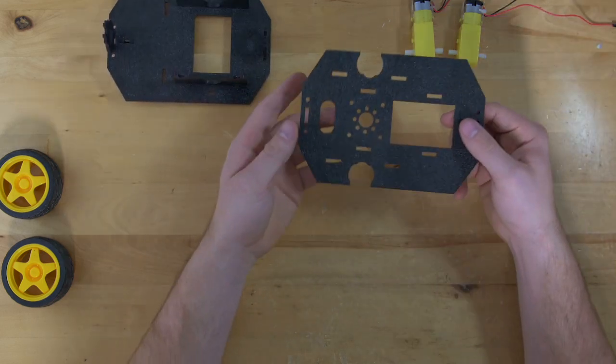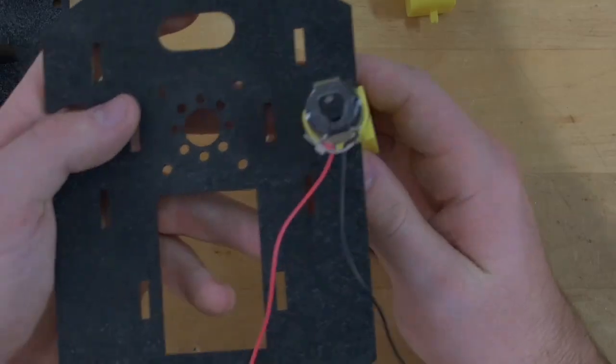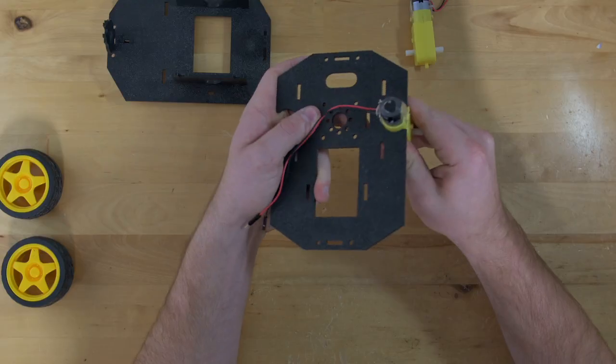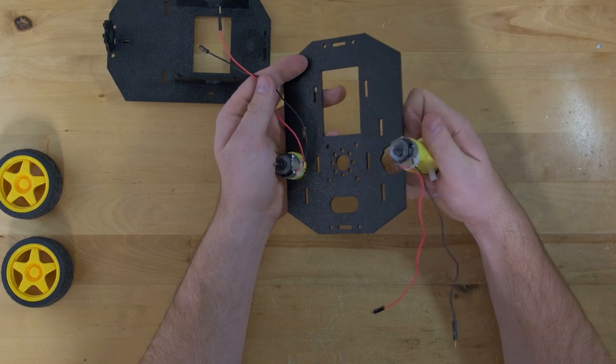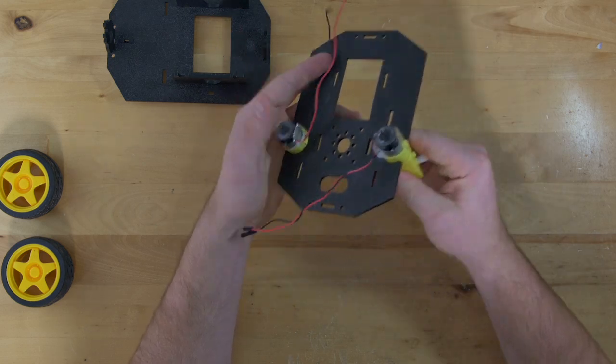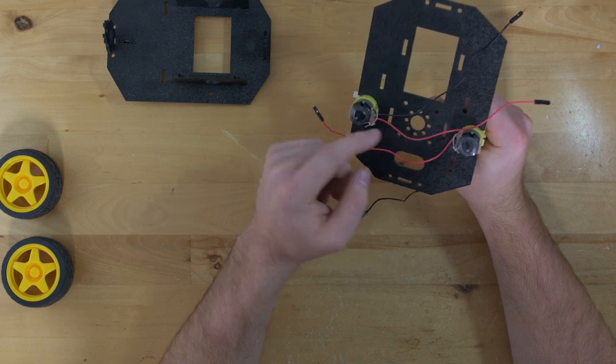Next, we'll move on to the top plate and attach our motors. In order to do this, you'll slide your motors in and then they twist 90 degrees until they lock right in place. When you put these in, make sure that you have your wires facing in towards the inside of the plate.